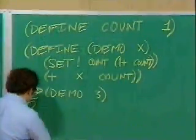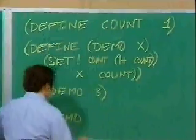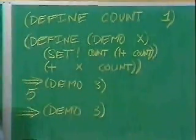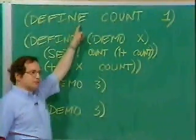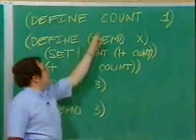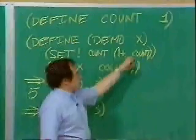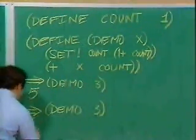Then I say, demo of, say, 3 again. And what do I get? Well, now count is 2. It's not 1 anymore, because I've incremented it. But now I go through this process. 3 goes into x. Count becomes 1 plus count, so that's 3 now. The sum of those two is 6, so the answer is 6.